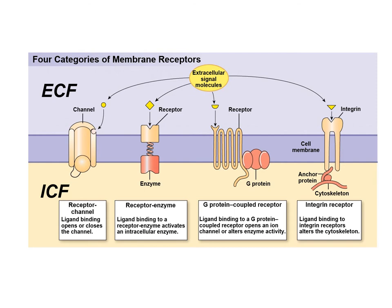Now we're into the new stuff. Let's talk about the different kinds of receptors. We've talked about second messages and the modes of signaling - electrical, chemical, or physical. Now let's look at some cell membrane receptors. These are found in the plasma membrane and are primarily responsible for extracellular signals. We're going to discuss each of these types: the receptor channel, the receptor enzyme, the G protein coupled receptor, and lastly an integrin-type receptor that interacts with the cytoskeleton.